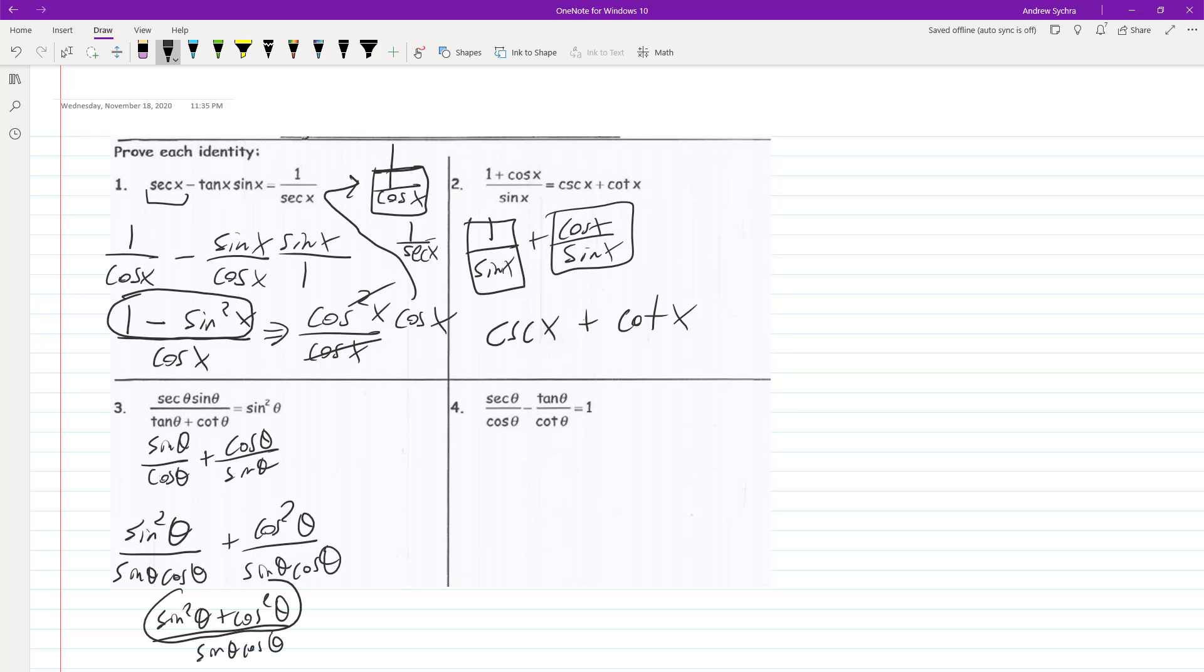And this is our trig identity. It's equal to 1. So we get 1 over sine theta, cosine theta. And what that means is we can reciprocate that. So essentially what we're going to end up with here is secant of theta.